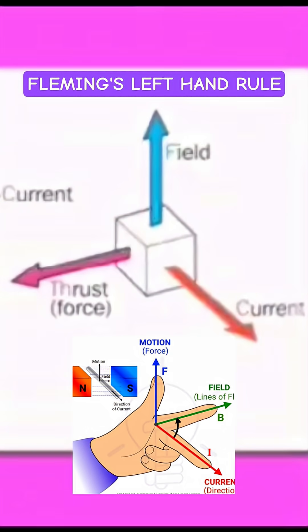The Fleming's left hand rule is used to find out the direction of the force on the current carrying conductor. Now the three things: the magnetic field, the current in the rod, and the force on the rod.